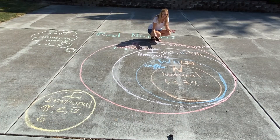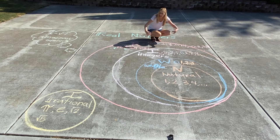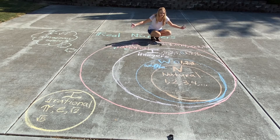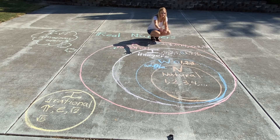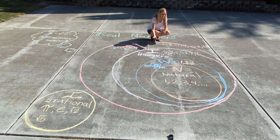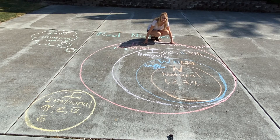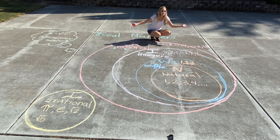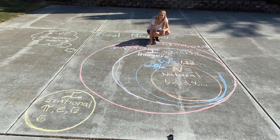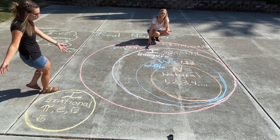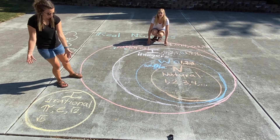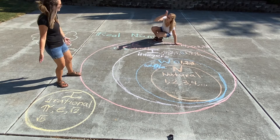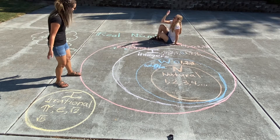Alright, it looks like we have the whole real number line — natural numbers, whole numbers, integers, and our rational numbers. Wait, wait, wait a minute — you're missing our whole subset of numbers over here: irrational numbers.